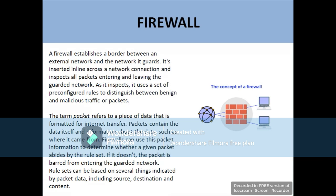Now, how do firewalls actually work? A firewall establishes a border between an external network and the network it guards. It is inserted inline across a network connection and inspects all packets entering and leaving the guarded network. It uses a set of pre-configured rules to distinguish between malicious and legitimate traffic or packets.